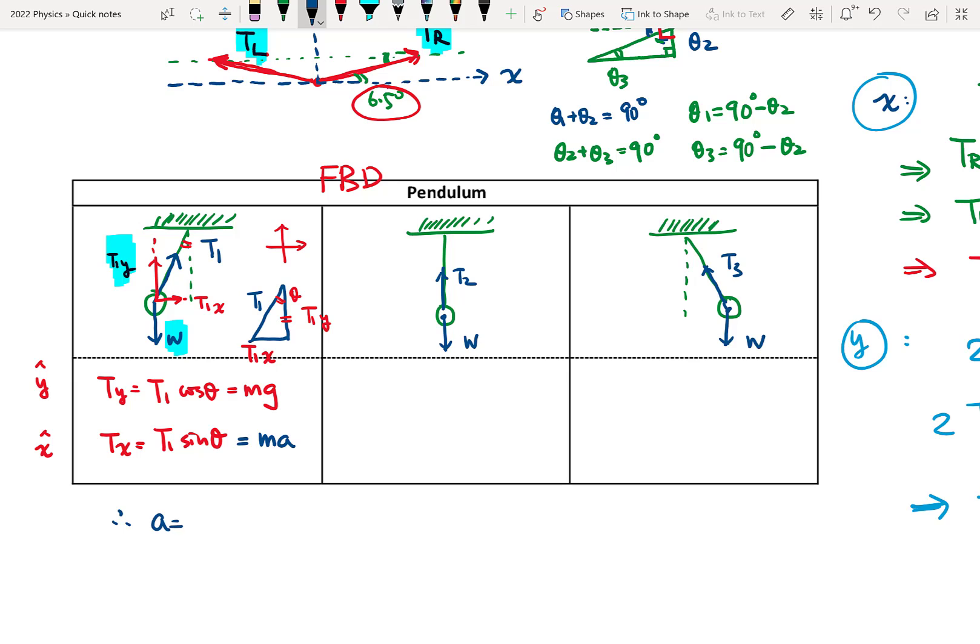So our acceleration will be how much? Our acceleration to the right would be T1 sine theta over M, for example, moving to the right.